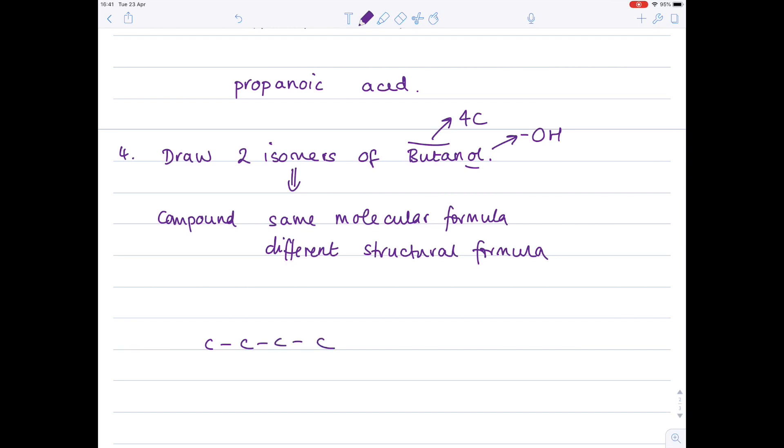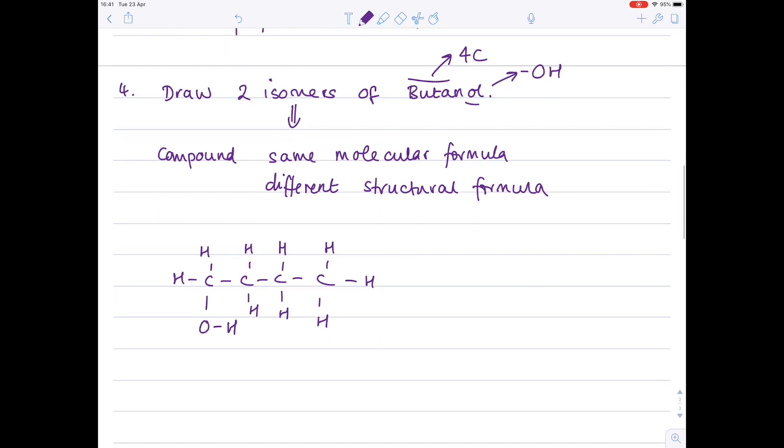So we're going to do a straight chain here. And we're going to put that functional group on the first carbon. And just to make sure you're really clear, this is called butan-1-ol. And that's because the OH is on the first carbon.